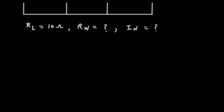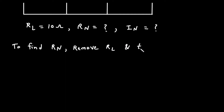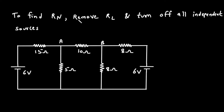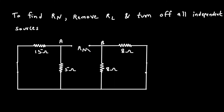First, let's find the value of Norton's resistance. To find Rn, we will remove RL and turn off all independent sources. There is a 6 volt voltage source, and when we turn off a voltage source we replace it by a short circuit. There is one more voltage source, so let's replace it by a short circuit as well. Now if we find the resistance between the two terminals, it will be our Norton's resistance Rn.